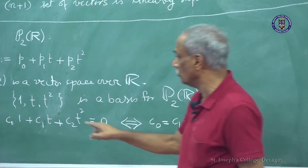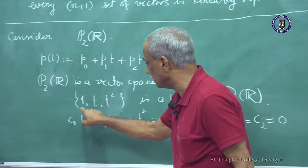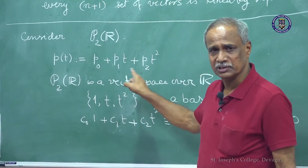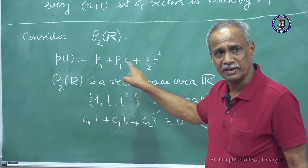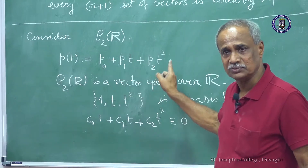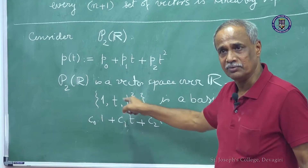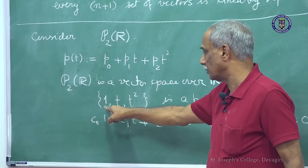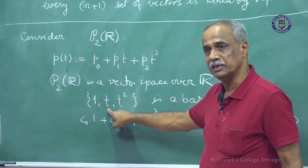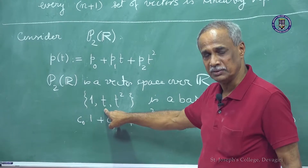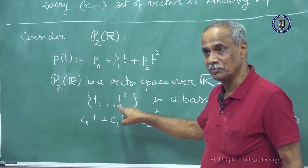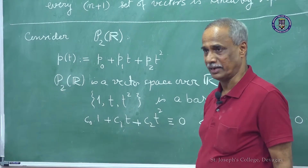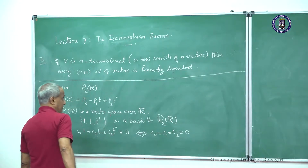Now you have to say that this spans the whole space — that is obvious, because any member of this class can be written as P0 times 1 plus P1 times t plus P2 times t².